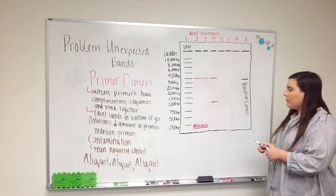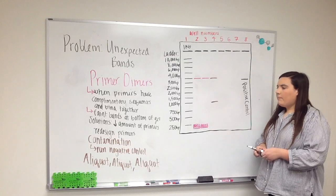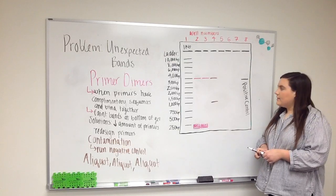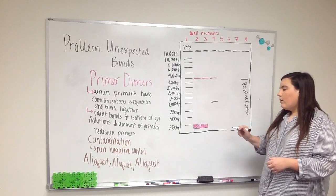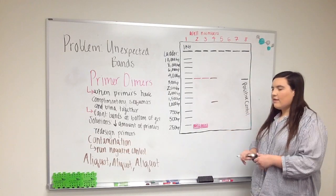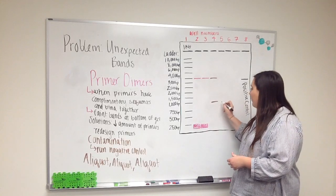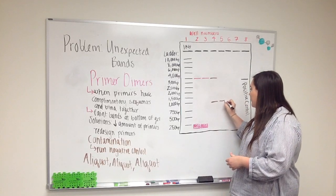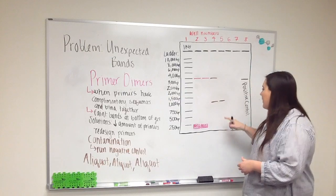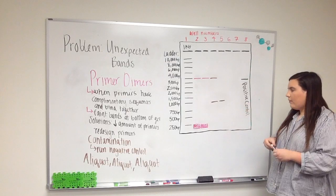How to diagnose this problem would be to run a negative control. You can run a negative control by using water instead of template DNA. If you have contamination in your reagents, meaning you already have some DNA that you weren't looking to amplify in the reagents, then you will run that sample that just contained water and it'll appear in the same spot that you had contamination in your other sample.